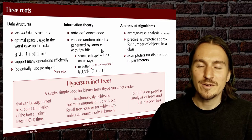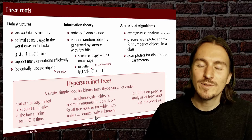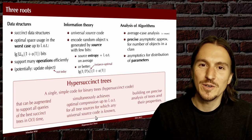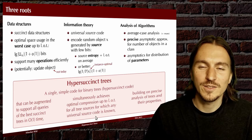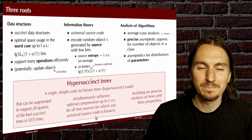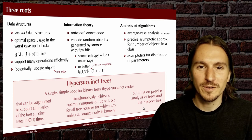We bring this together by presenting hyper succinct trees — a single simple code for binary trees, a compression method that can be augmented to support all sorts of operations on trees efficiently in constant time on a word RAM, while at the same time achieving the best space bound known for any universal source code on a whole list of binary tree sources. We built our analysis on the tools from the AOFA community.